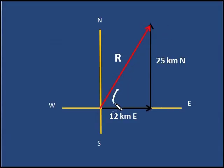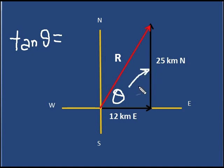So let's go back to our triangle. I need to find theta. I write down tan theta equals. And it is the opposite over the adjacent. 25 over 12. So I put those numbers into my calculator.